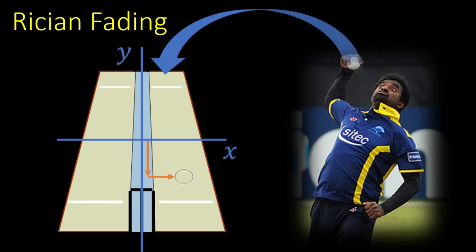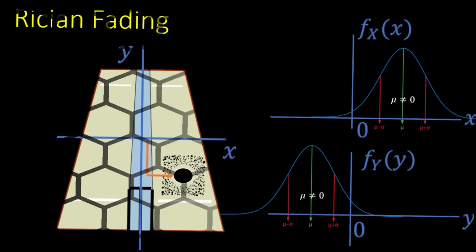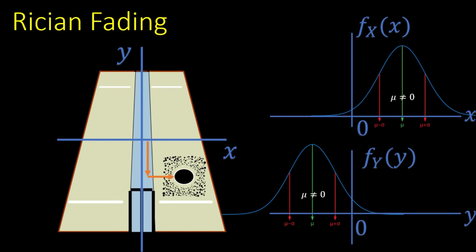Now with this marker, the bowler is more likely to get a wicket of a right-handed bat. So for Murali, the pitch map concentration has an offset from the center. Now again the distribution along x and y-axis is Gaussian and it is as follows. Notice that both x and y-axis have now a non-zero mean.